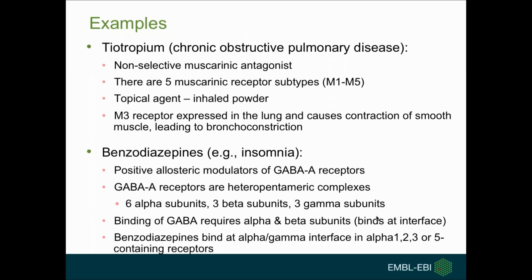For example, tiotropium is approved for COPD and is a non-selective muscarinic antagonist binding all five family members. But since it's a topical inhaled agent and the M3 receptor has the highest lung expression and is linked to bronchoconstriction, we could more specifically annotate the muscarinic M3 receptor as the key efficacy target.